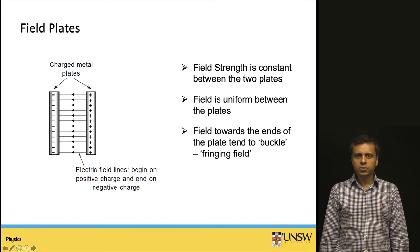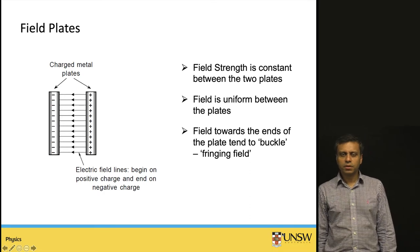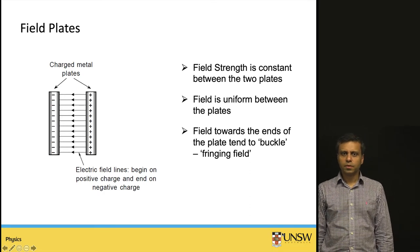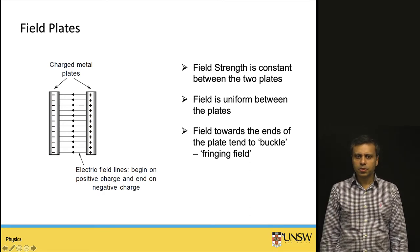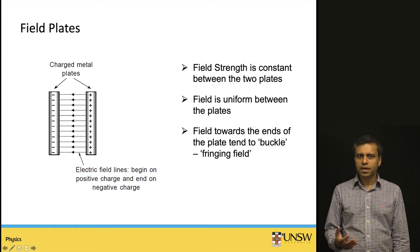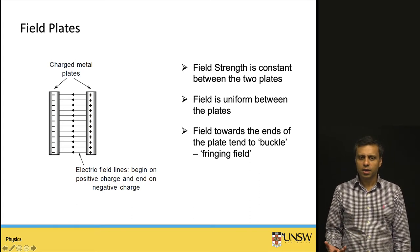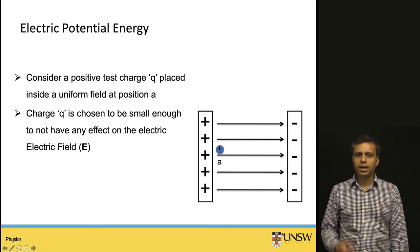Now we will discuss electrical potential energy. Potential energy is a kind of stored energy — when an object has potential energy, it has the capacity to do work. Previously we looked at gravitational potential energy; now we will look at electric potential energy.